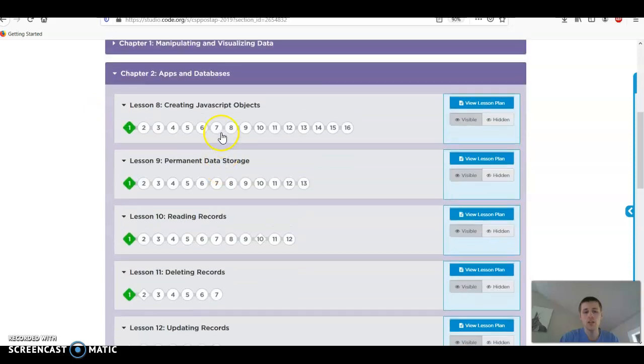We're going to be focusing on chapter two here. So we're going to be looking at lesson eight this week, creating JavaScript objects. And then we're going to be dealing with permanent storage a little bit for the next couple of weeks. So that's where we're going. So you're going to be working through this lesson. You need to get all the way through all these 16 bubbles. Many of these bubbles are just write one line of code and hit okay. So it shouldn't take you super long.